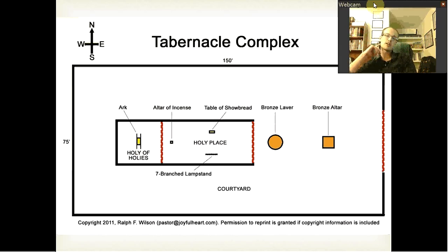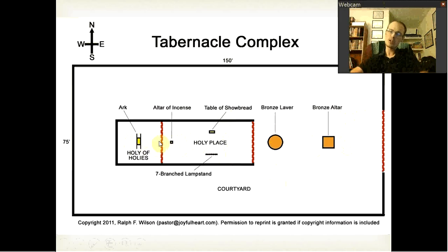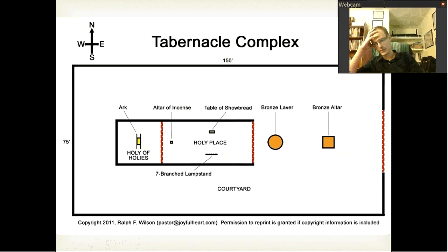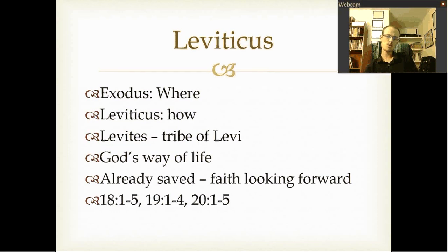Here we have the tabernacle complex. You have the outer courts, the bronze altar, the bronze laver, the table of showbread, and the seven-branch lampstand in the holy place with the altar of incense. In the Holy of Holies is the Ark of the Covenant — they could only enter once a year and only the high priest could. So you have the courtyard, the holy place, and the holy of holies. In church circles there's that song 'Take Me In' — 'Take Me Into the Holy of Holies by the Mercy Seat' — it's talking about this.